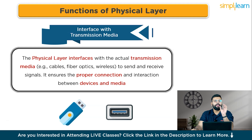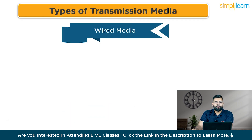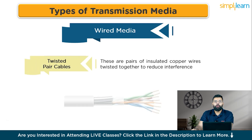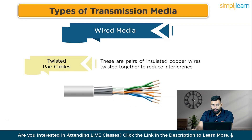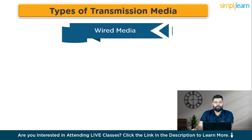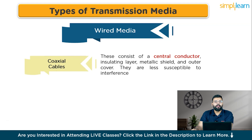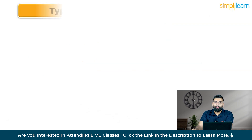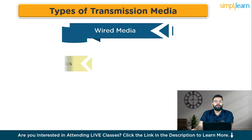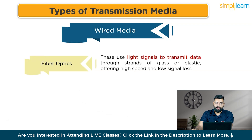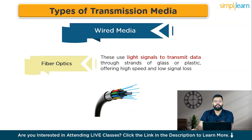Transmission media can be broadly categorized into wired and wireless. In wired media, first are twisted pair cables — pairs of insulated copper wires twisted together to reduce interference, used in telephone lines and ethernet cables. Then come coaxial cables — consisting of a central conductor, insulating layer, metallic shield, and outer cover, less susceptible to interference, commonly used in cable television networks. Then come fiber optics — using light signals to transmit data through strands of glass or plastic, offering high speed and low signal loss, used in high-speed internet and long-distance communication.